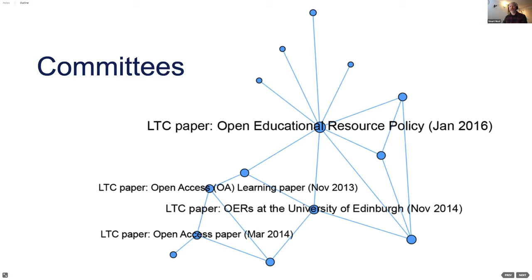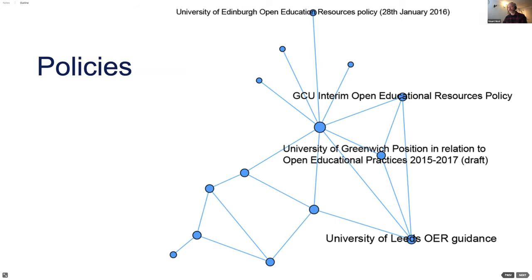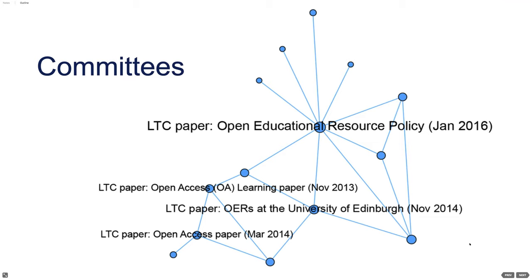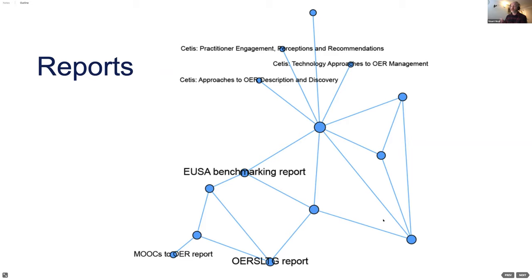Stuart maps out the journey as a network of influence under three themes: committees engaged with, reports that influenced them, and derived policies. They engaged with the Learning and Teaching Committee, where early papers in 2014 moved from conversation about open access to the VLE towards a policy much more about digital literacies. In terms of reports, they commissioned CETIS for three reports: one on practitioner engagement and perceptions — which showed OER understanding wasn't well developed — one on technology, and one on description and discovery.